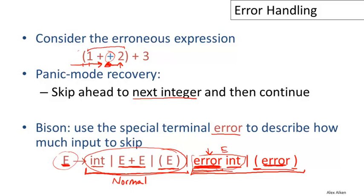You can have these productions that involve the error token for as many different kinds of symbols in the grammar as you like.